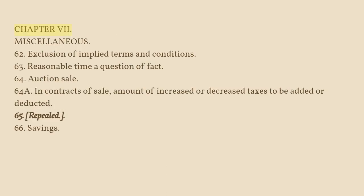Chapter VII — Miscellaneous. Section 62: Exclusion of Implied Terms and Conditions. Section 63: Reason of Time a Question of Fact. Section 64: Auction Sale. Section 64A: In Contracts of Sale, Amount of Increased or Decreased Taxes to be Added or Deducted. Section 65: Repealed. Section 66: Savings.